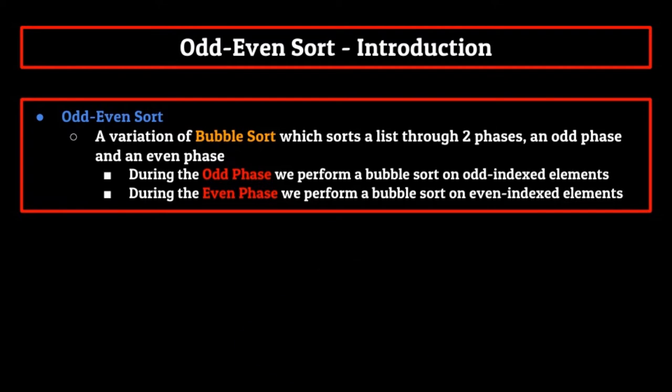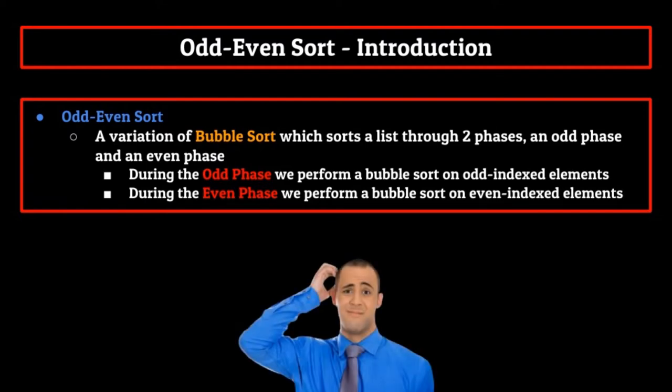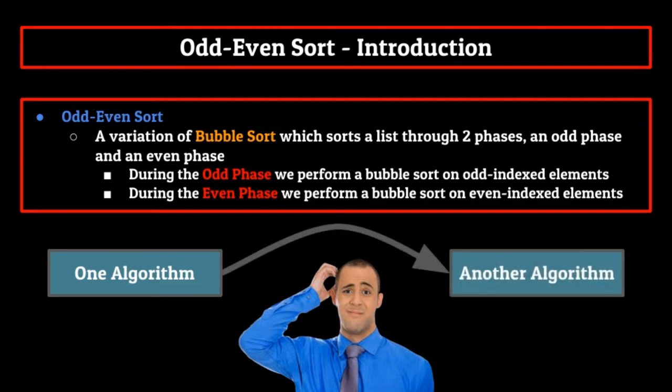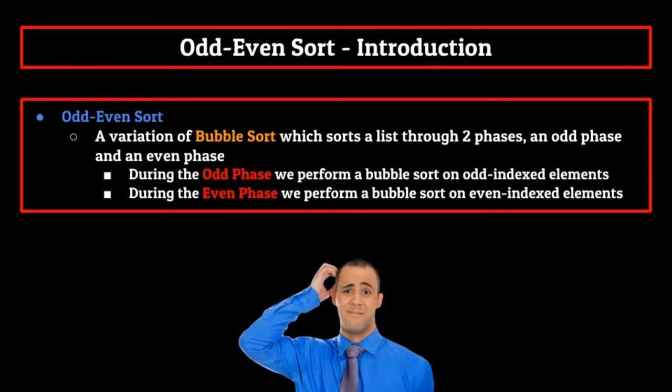Now this might have some of you scratching your head. How can we sort a list using a particular algorithm but use another algorithm within that algorithm? It seems like an extremely terrible inception parody. Well, actually, this is common practice in computer science, and something that will definitely not just be happening this one time. By taking a certain algorithm and only implementing it on certain areas of our data, we can sometimes create something even more efficient than the two parts. This will come into play later on in the series, so keep this idea in mind.